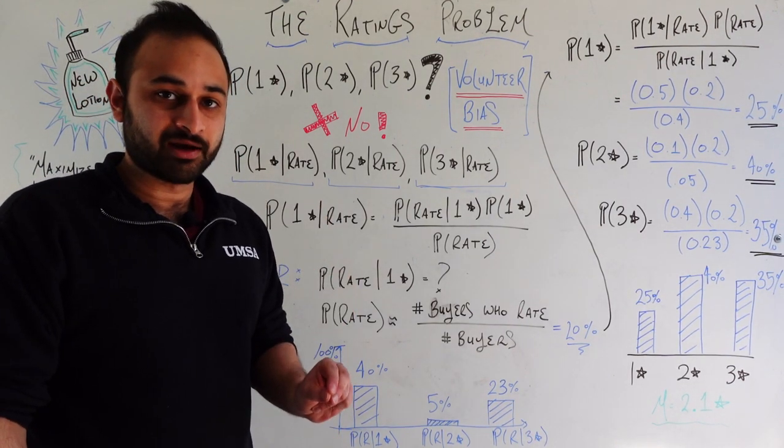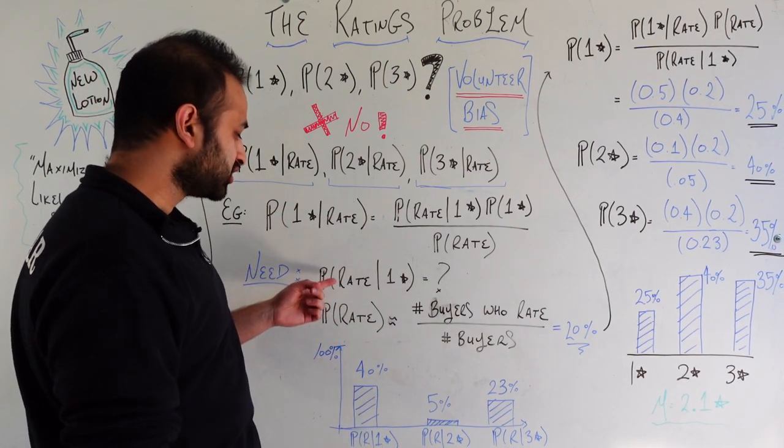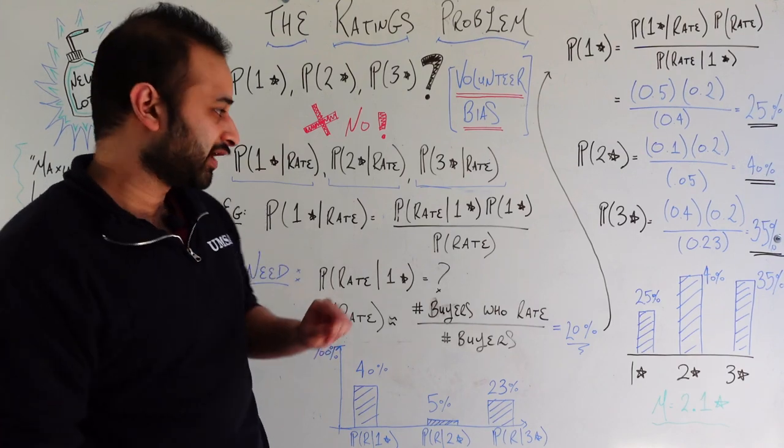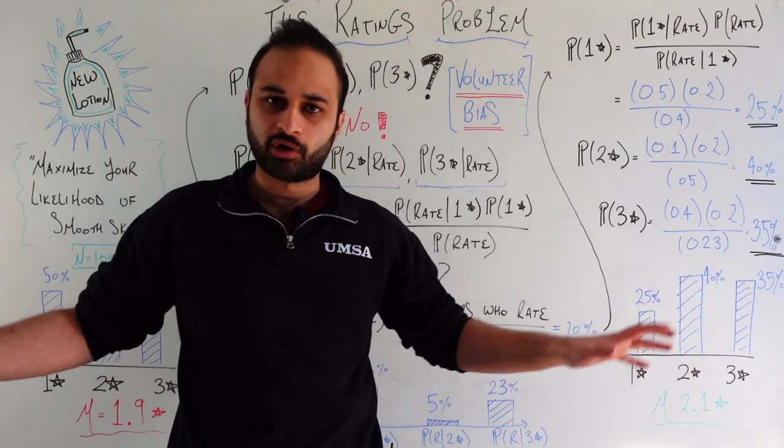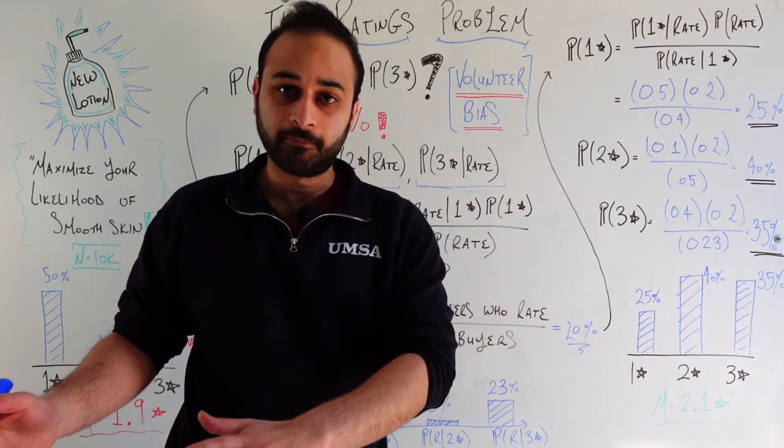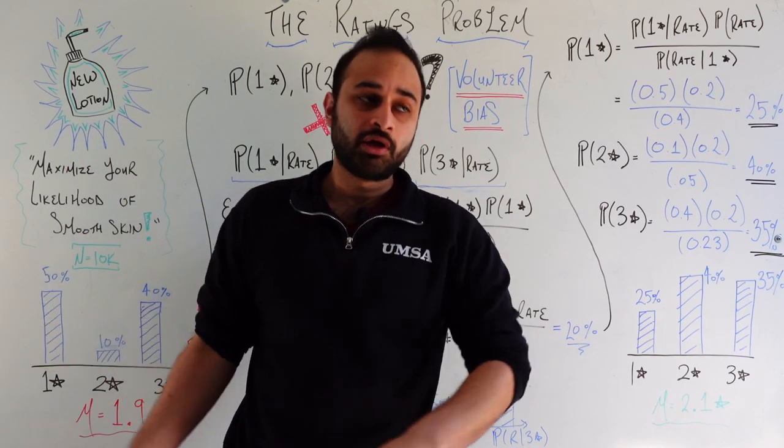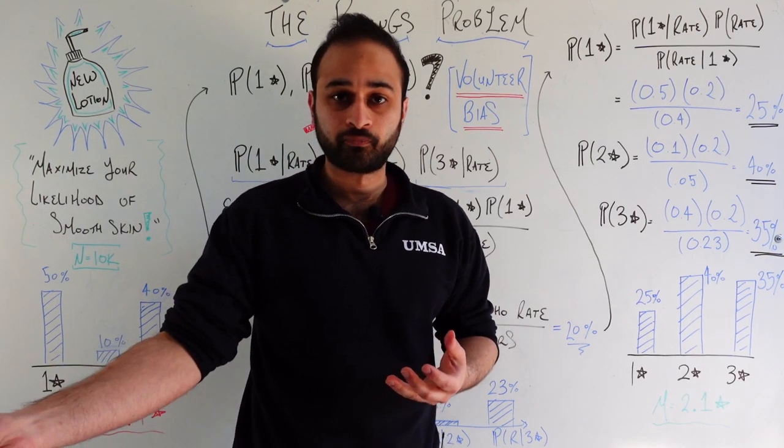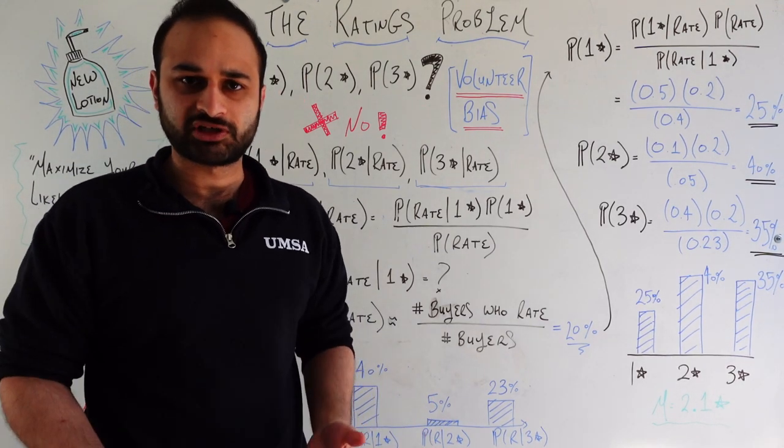Now the more tricky probability to get and the one that is key to the heart of this entire problem is this guy. What's the probability that someone would rate your product given that they actually believe it deserves one star? Let's pause and think about what that means. There is some section of people out there in the world that think your product actually deserves one star. They actually just don't like it and that's totally okay. Now the thing we're after is that for that section of people who truly hate your product, what is the probability that they would rate it? That they would feel they need to go rate this product on your website? And let's say that's equal to 40%. I'll come back to how do we get these numbers in just a moment, but let's just say that's 40%, pretty high.